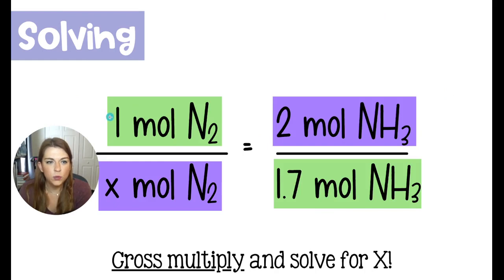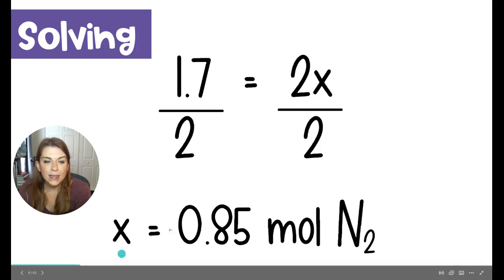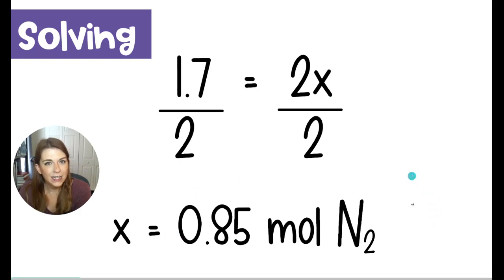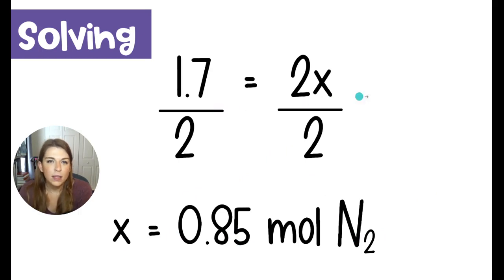When we cross-multiply, we would do the 1 times the 1.7 and the 2 times the x. And it would look like this. We would get 1.7 on one side and 2x on the other. We're going to divide both sides by 2 in order to get the x by itself. And this indicates that we'd have 0.85 moles of nitrogen needed to get 1.7 moles of ammonia in our final product.